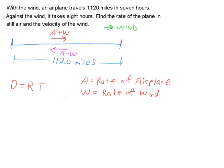In this example, I'll walk through a distance-rate-time problem with the added benefit of some wind or some current. With the wind, an airplane travels 1120 miles in 7 hours. Against the wind, it takes 8 hours. Find the rate of the plane in still air and the velocity of the wind.